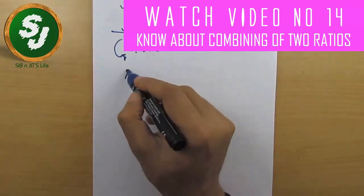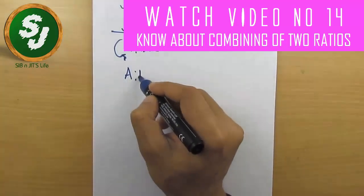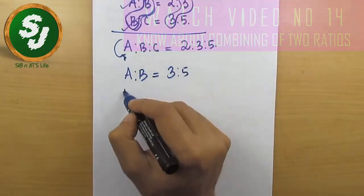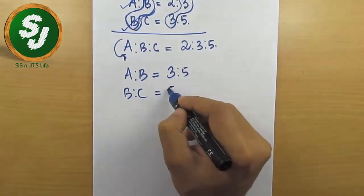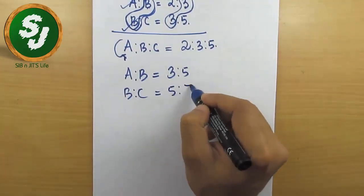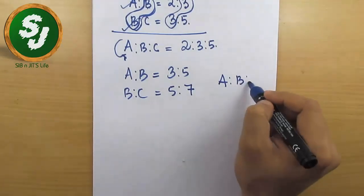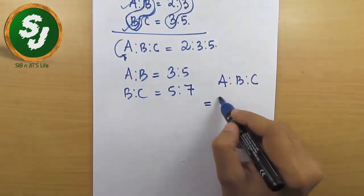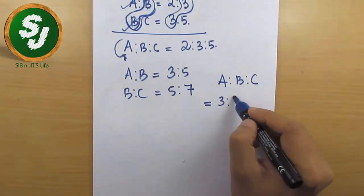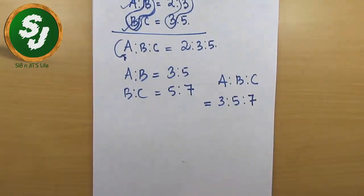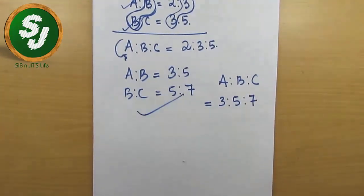Another example: a:b = 3:5 and b:c = 5:7. Find a:b:c. Since both b values match, the answer is simply 3:5:7, and you are absolutely right. But that approach is not always enough.